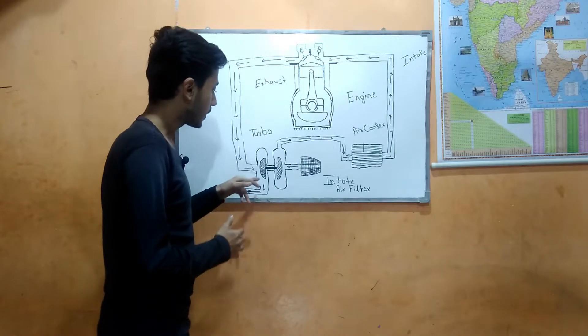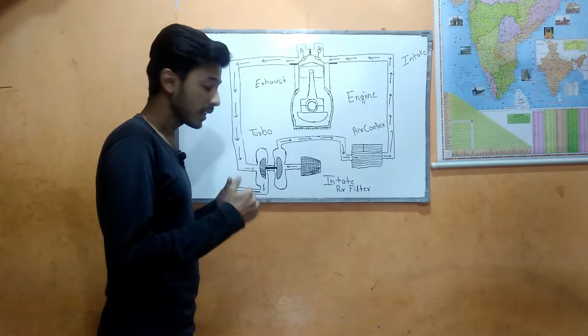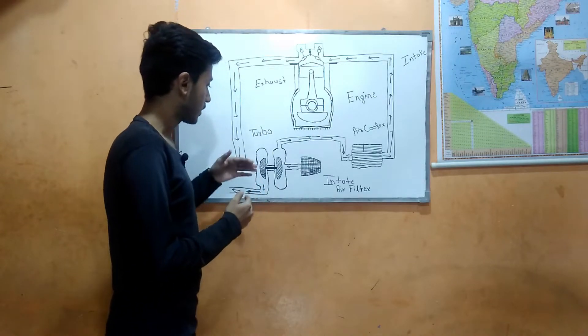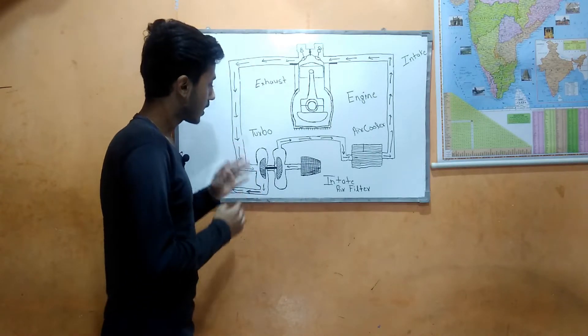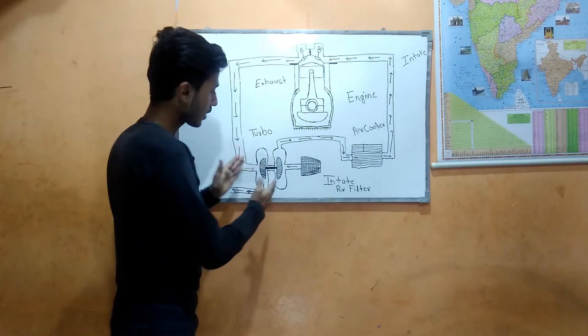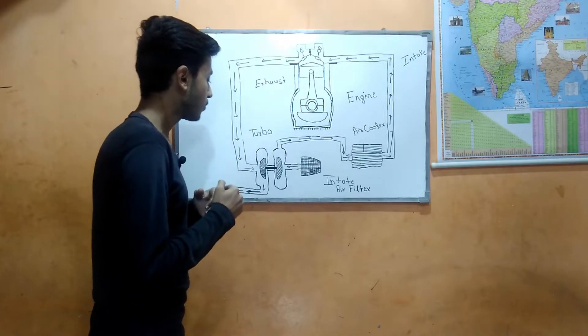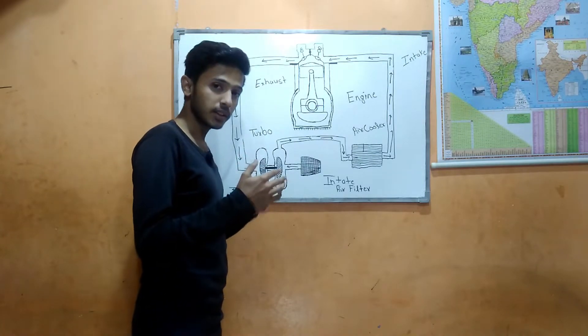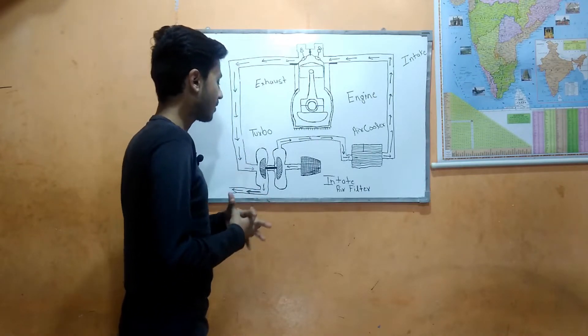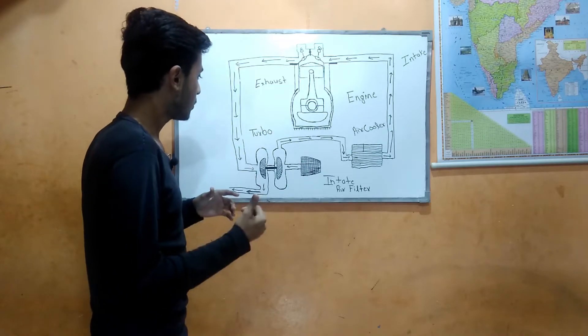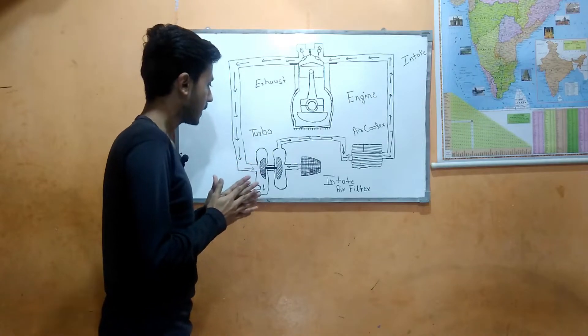Manufacturers try to improve the turbine impeller and blade design. They also use better bearings in the turbocharger shafts with less friction, which makes a lot of difference.